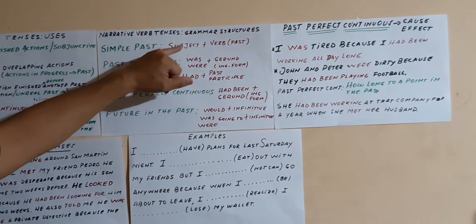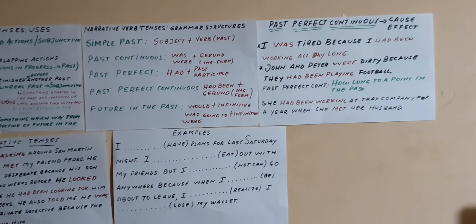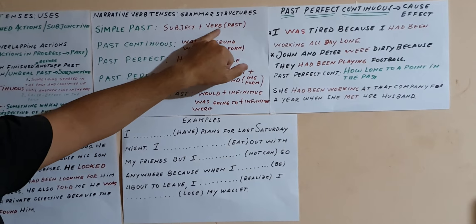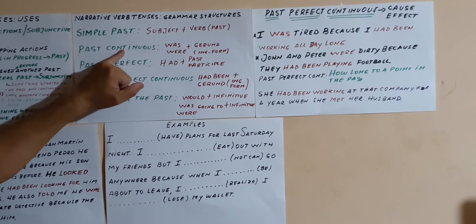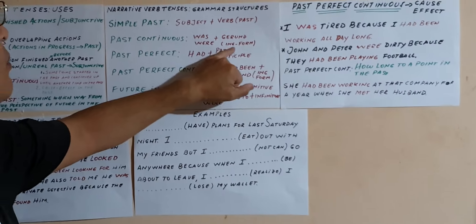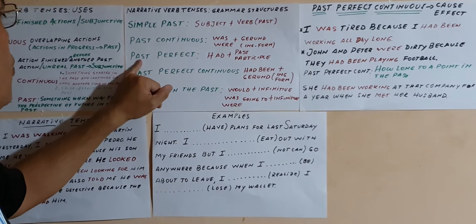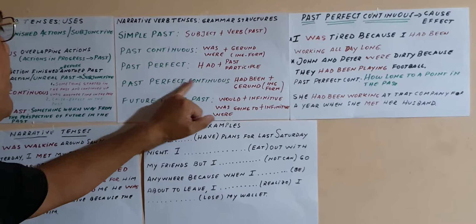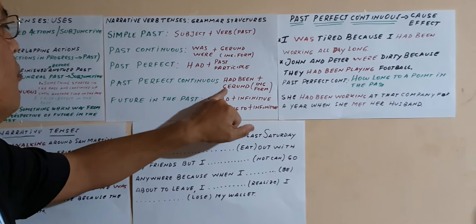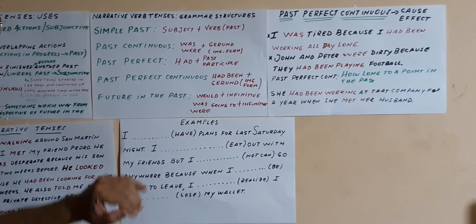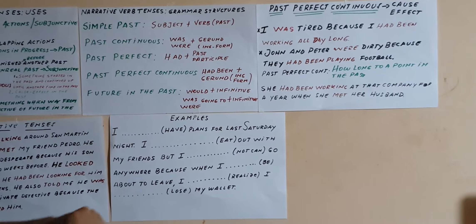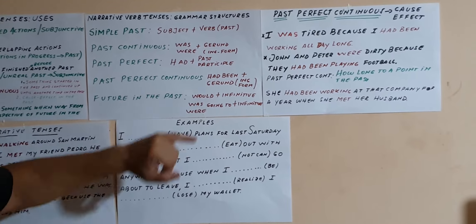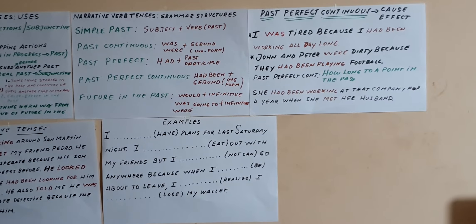Now let's deal with the grammar structures of the different tenses. Simple past: subject plus the verb in the past. The past continuous: 'was' or 'were' plus the gerund — that is to say, the -ing form. Past perfect: 'had' plus the past participle. Past perfect continuous: 'had been' plus the gerund — that is to say, the -ing form. Or the future in the past: we can use 'would' plus infinitive, or 'was' or 'were going to' plus infinitive.